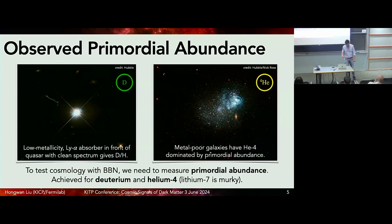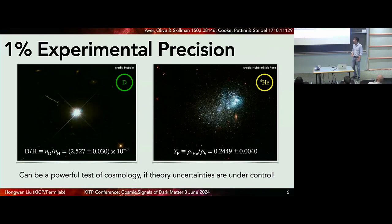In order to test cosmology at MeV scales, you need to measure these very precisely. We have achieved this for deuterium and helium-4. Lithium-7 is a very interesting story we can talk about if anyone's interested. Currently, if you look at the current measurements we have of D over H and Yp, we're at the one percent level for both. If we can control things on the theory side, then we would have a very powerful test of cosmology, potentially on the percent level, which is what we've come to expect for CMB.